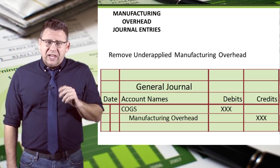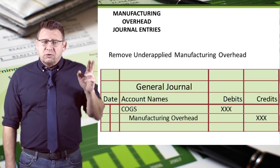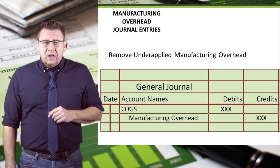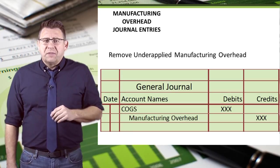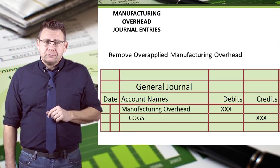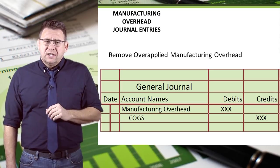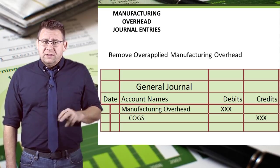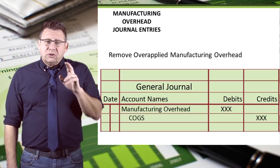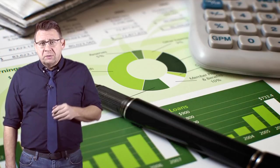The journal entry to remove the under-applied balance looks like this: it's a debit to cost of goods sold and a credit to manufacturing overhead. This adjusts cost of goods sold to the correct amount and zeros out the balance in manufacturing overhead. And that concludes this short video on accounting for over and under-applied overhead.